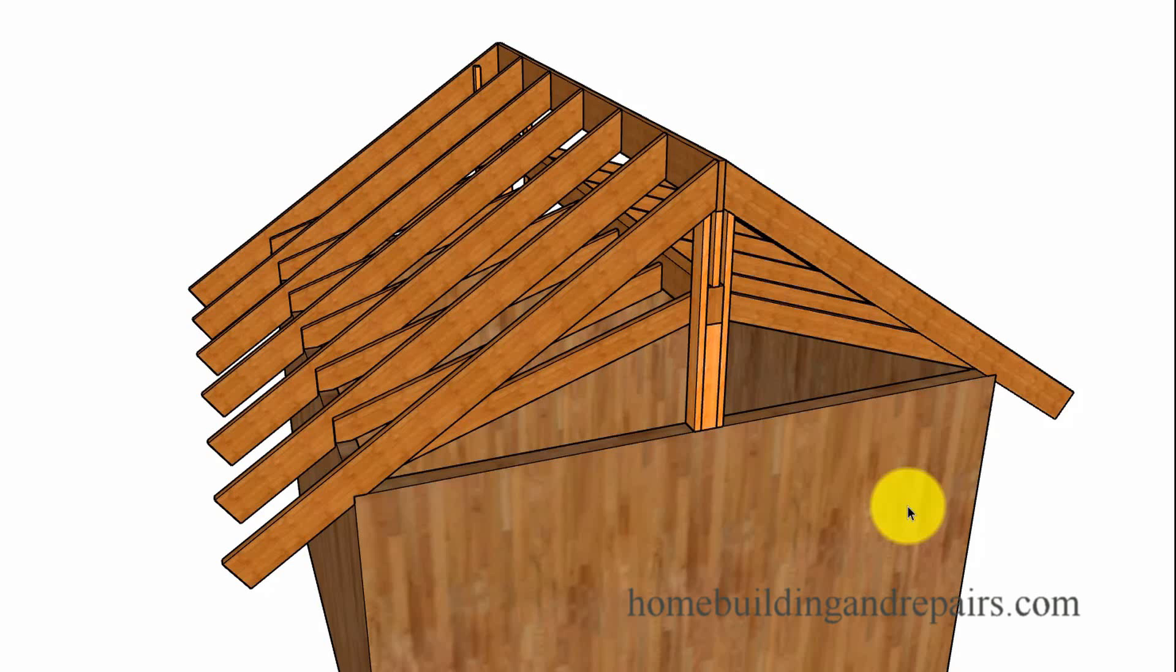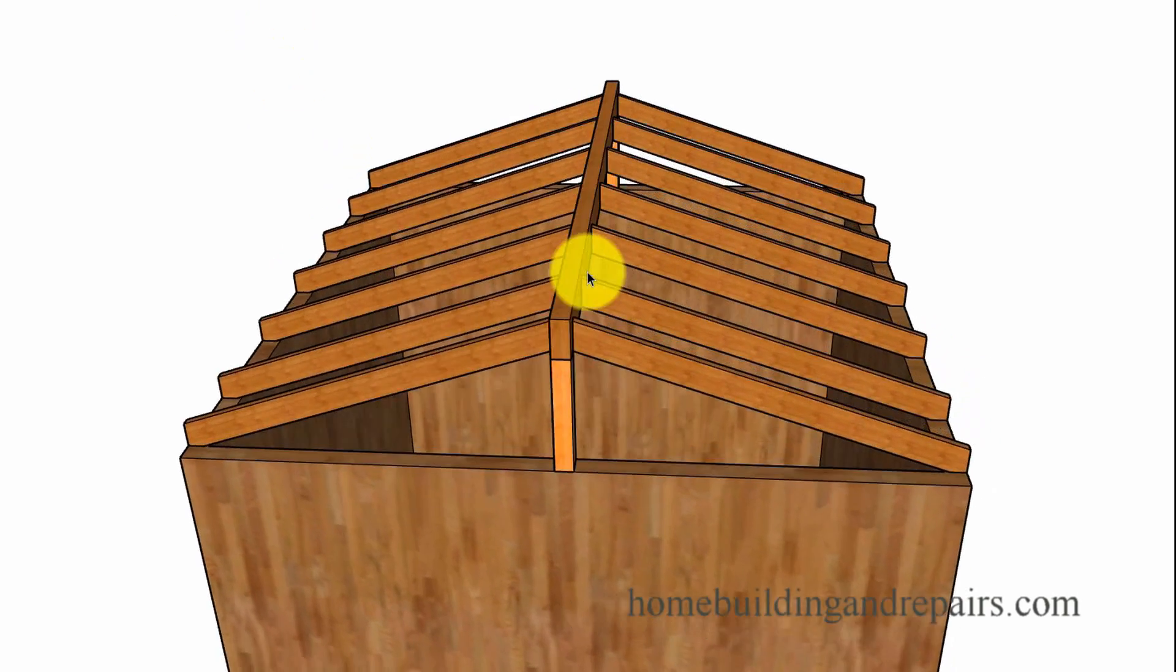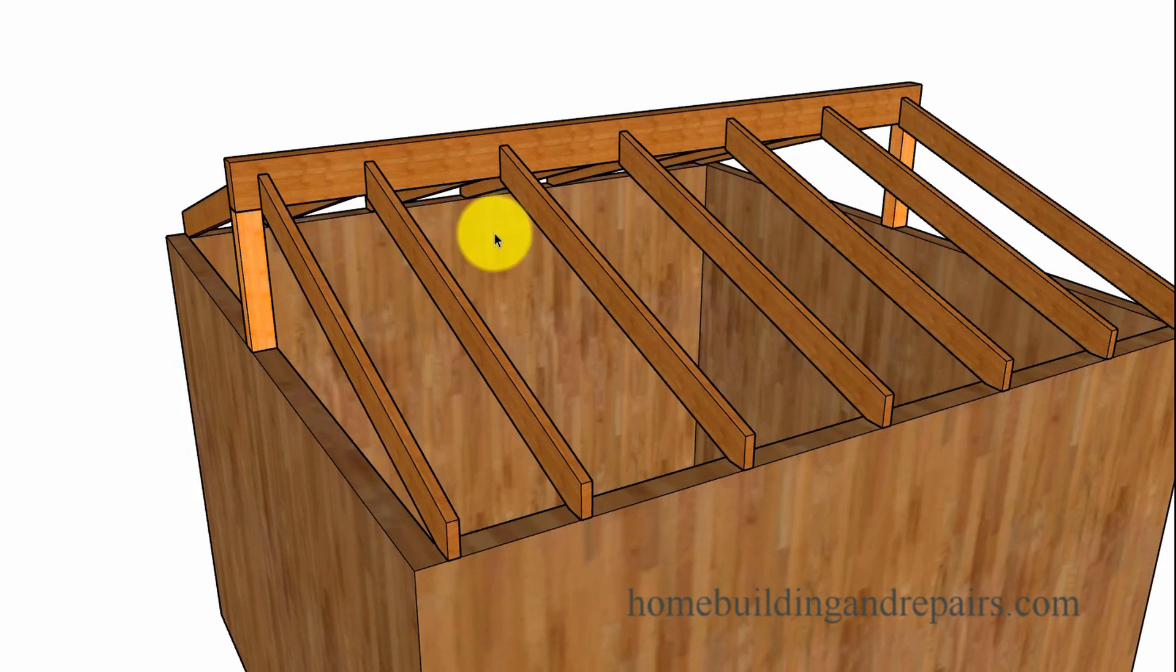This is a 12x12 building with support posts underneath the ridge beam for the ceiling and the ridge for the roof rafters. Let's remove that section and take a look at the first section that will need to be built. You could build the upper section first for something like this.